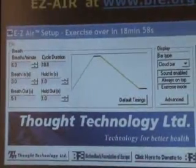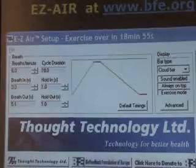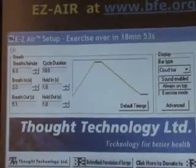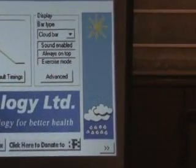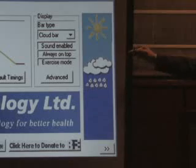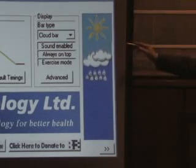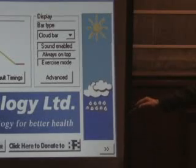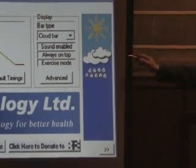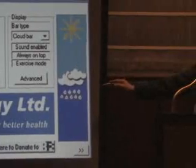Let's all do it for about 30 seconds at six breaths per minute, following the little cloud going up and down. Remember to breathe in and let your stomach go out, so you're breathing diaphragmatically. Breathe in — one, two, three — and out. Not too deeply, just relax. And in... and out. You can keep breathing like this, but please don't fall asleep.